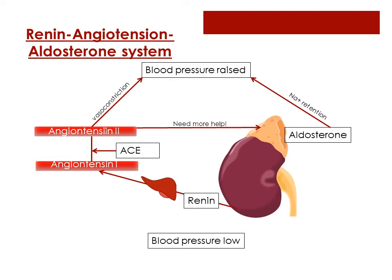An important system that helps with blood pressure regulation is the renin-angiotensin-aldosterone system. The kidneys at any given moment are sensing our blood pressure and fluid volume, every moment of every day. If blood pressure is low, the kidneys spring into action and release a messenger called renin that travels to the liver and asks for help to raise the blood pressure.